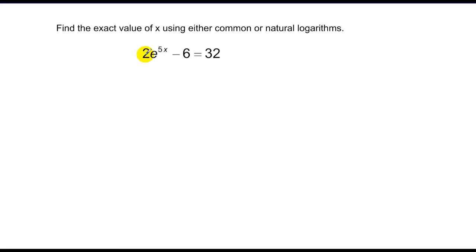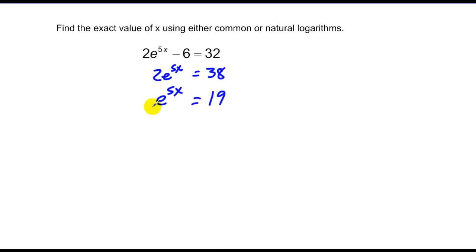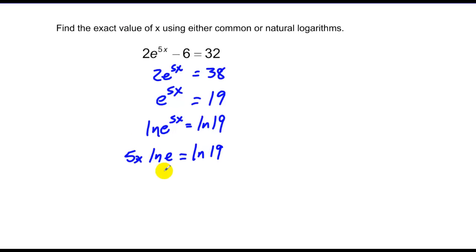In this case there are multiple terms on the left side of the equation. I want to isolate the exponential term first — bring the 6 over to get 38 equals 2e to the 5x. Divide by 2 to isolate the exponential: 19 equals e to the 5x. Take the natural log of both sides since I have a base of e: the natural log of e to the 5x equals the natural log of 19. Bringing 5x out as a product, the natural log of e is 1, so 5x equals the natural log of 19. Therefore x equals the natural log of 19 over 5.